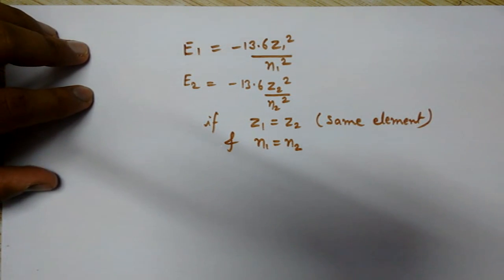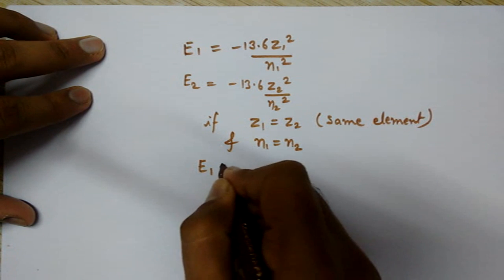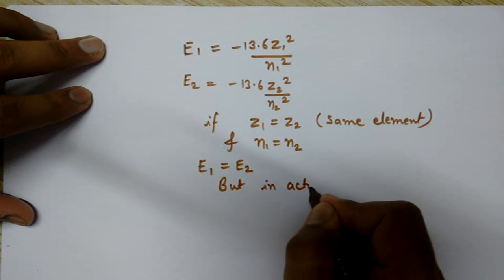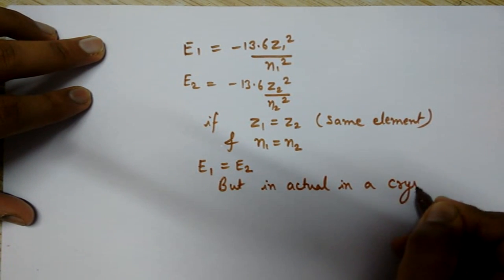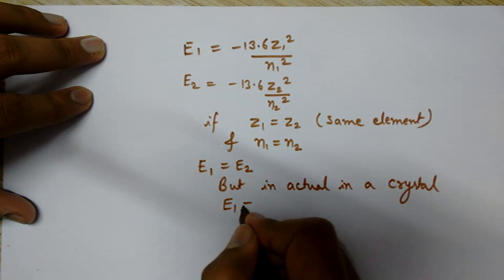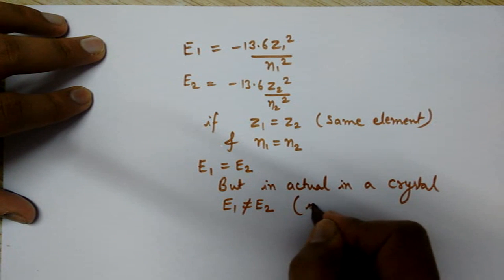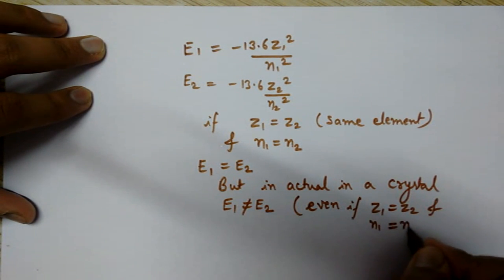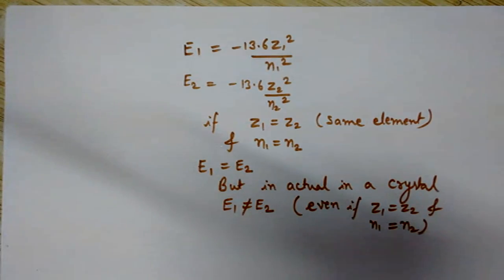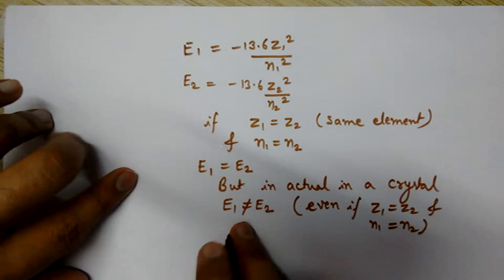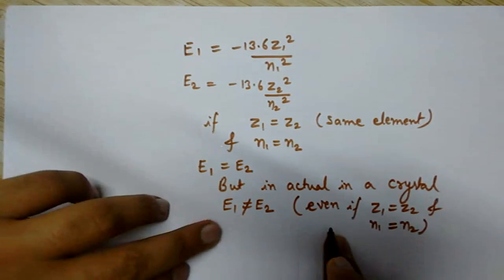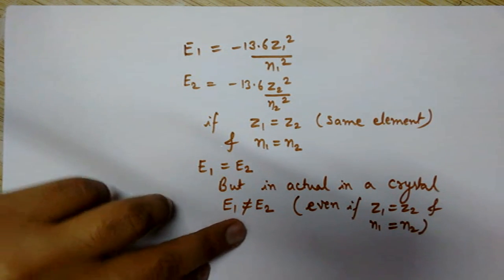So we can say that Energy₁ equals Energy₂. But in actual fact, in a crystal, Energy₁ is NOT equal to Energy₂, even if Z₁ equals Z₂ and n₁ equals n₂. Why does this happen? Even in a crystal, if n and Z are both the same, E₁ will not be equal to E₂.